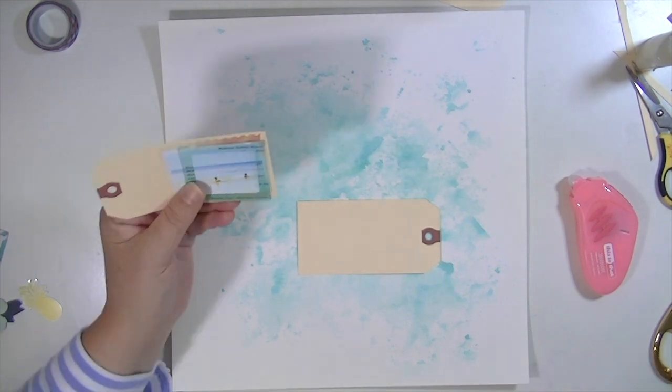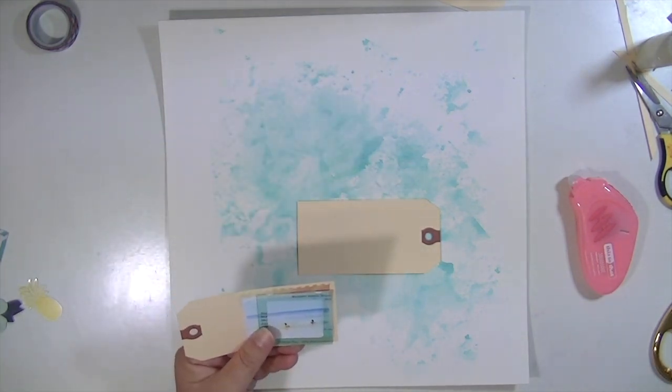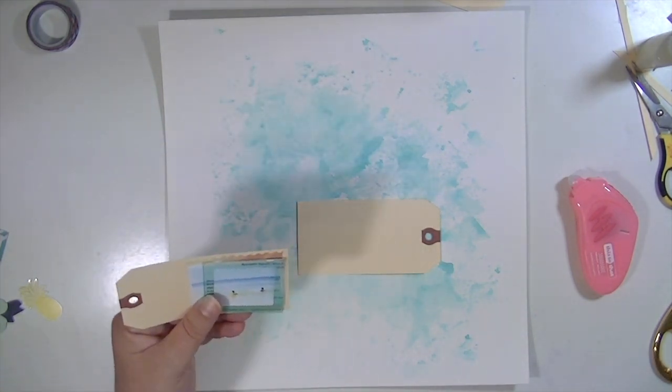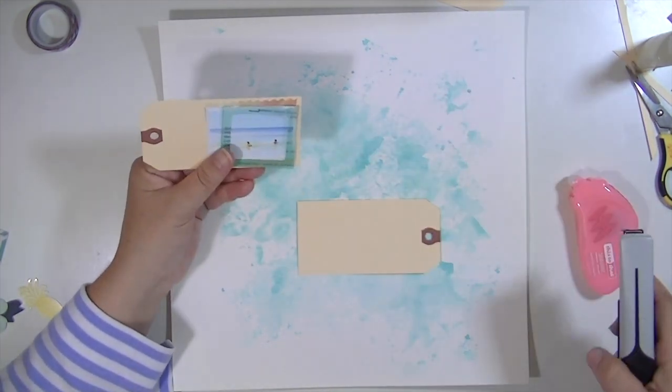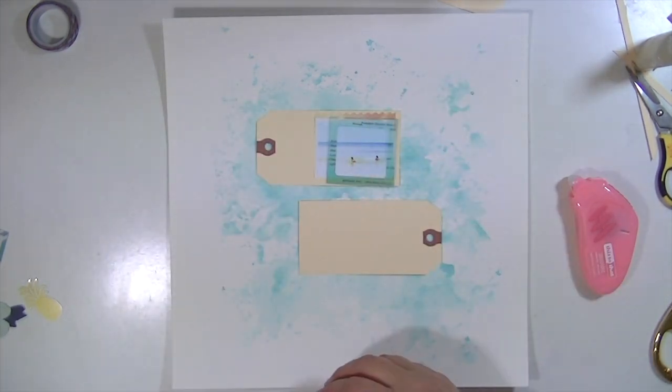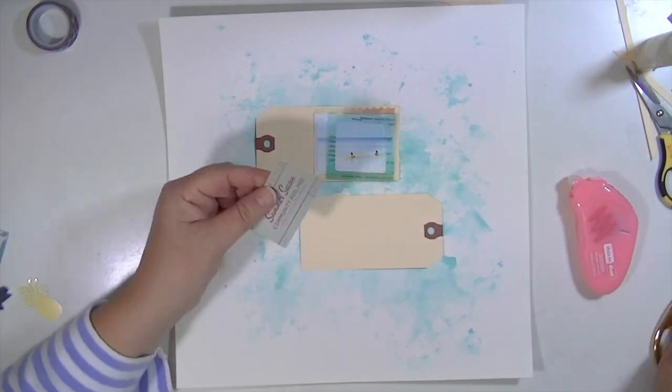I'm going to take this little acetate frame and I'm just going to staple it onto the top of the tag. I have gold staples in my stapler and I have a video of how to make gold staples, so I'll try to remember to put a link below to that video because it's super fun.